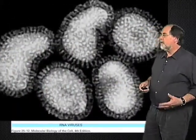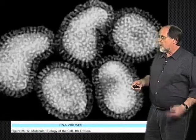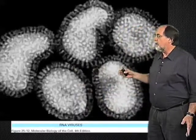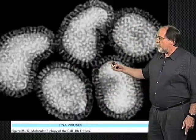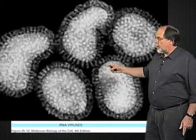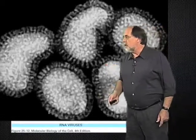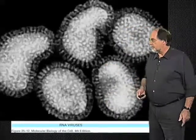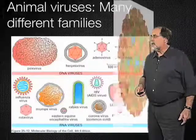Viral particles look very different in the electron microscope. This is how the influenza virus looks — the virus particles are not identical in shape, but they all have this envelope. In the envelope you can see projections which form the envelope glycoproteins, which are very important during virus entry into cells.